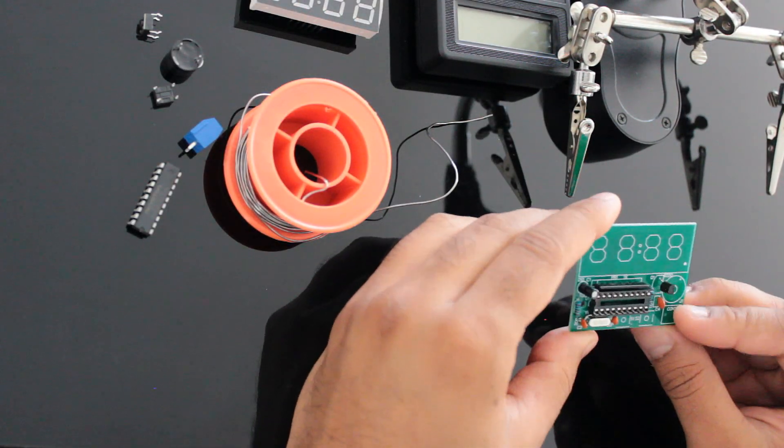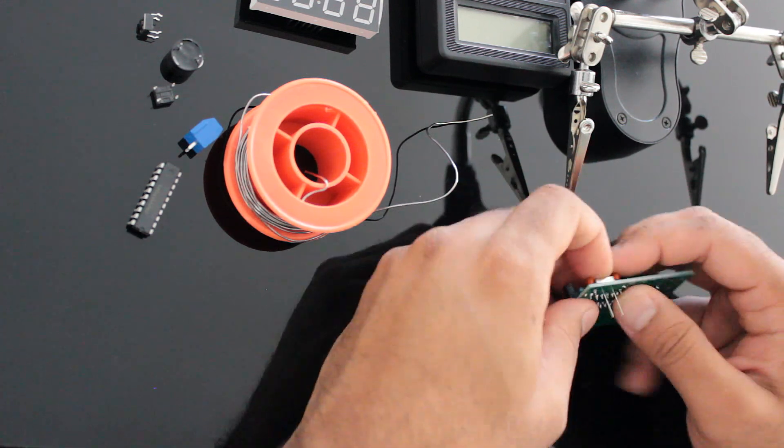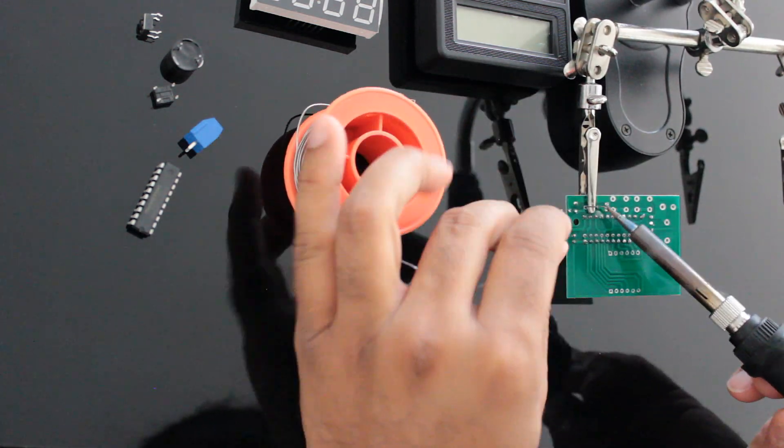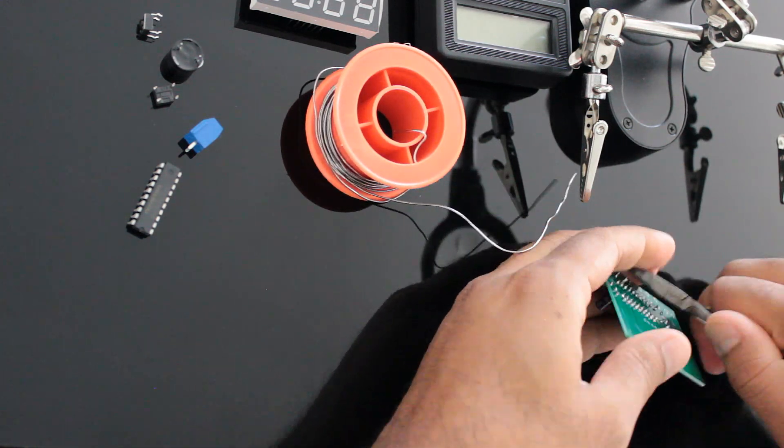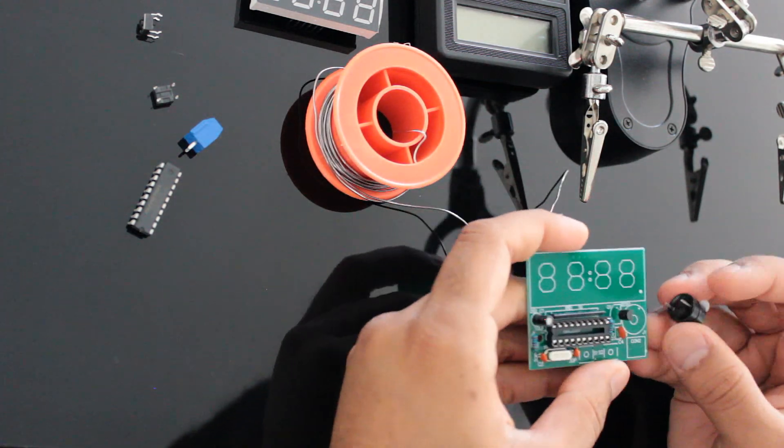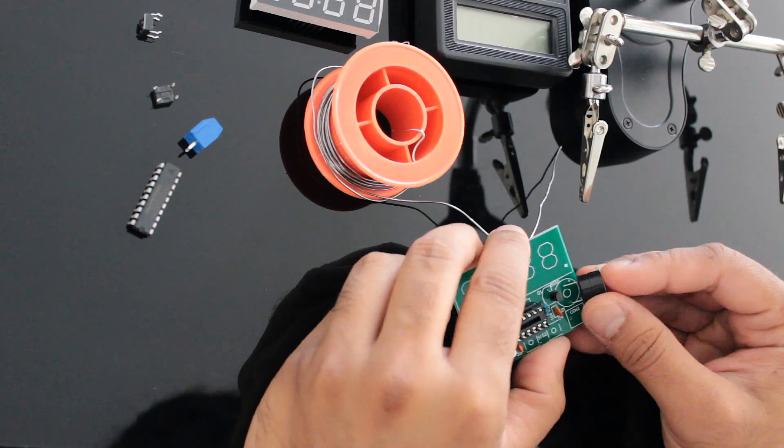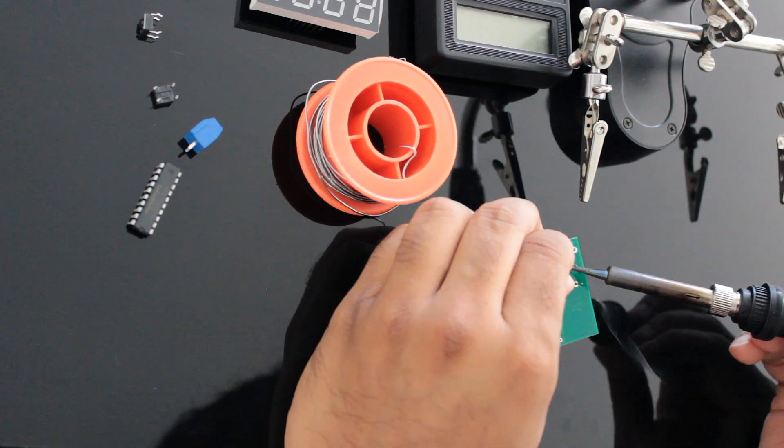Next I'm soldering the 12MHz oscillator crystal and the buzzer to the board. The positive leg of the buzzer slides into the hole which has a plus mark on it.